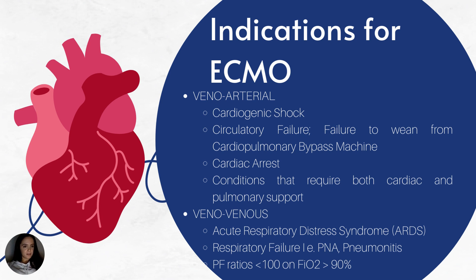Indications for ECMO differ between VA and VV. For veno-arterial ECMO, indications include cardiogenic shock, circulatory failure, or failure to wean from cardiopulmonary bypass after a CABG or valve replacement. Some patients post-cardiac arrest will be placed on VA ECMO to rest their heart. VA ECMO is for conditions requiring both cardiac and lung support.